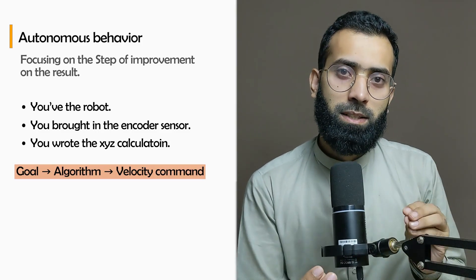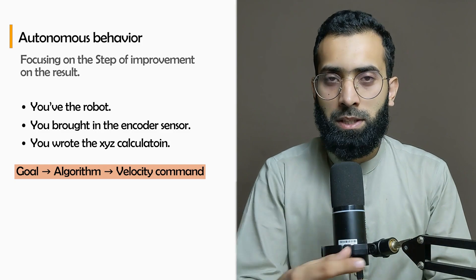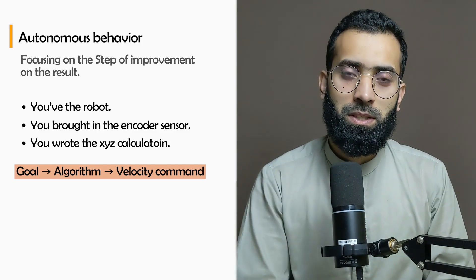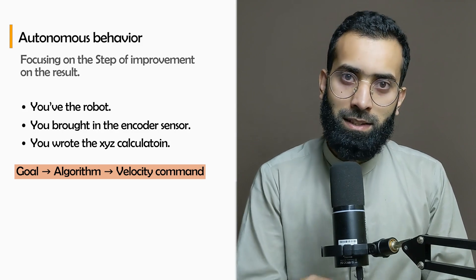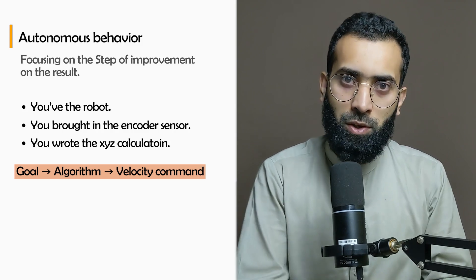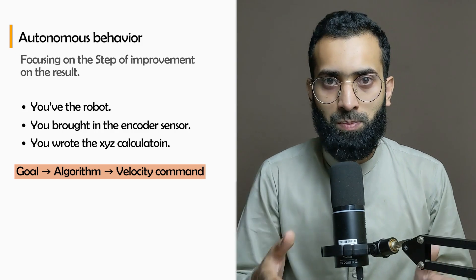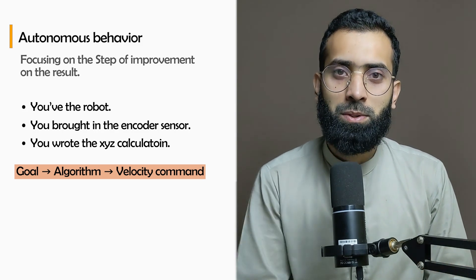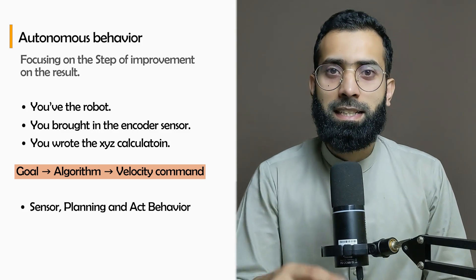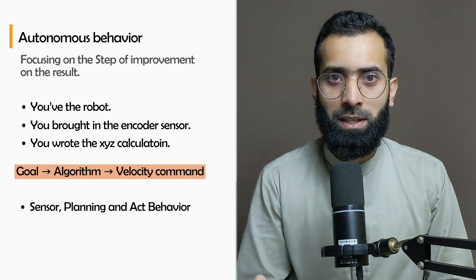The goal that you are going to send to the robot - then the algorithm that you write is going to produce velocity command that the robot is going to take. So mathematics in calculating the robot x, y, z, trigonometry equation, probability for smoothing the robot location - all of that combines and produces sensor, planning, and act behavior from the robot.